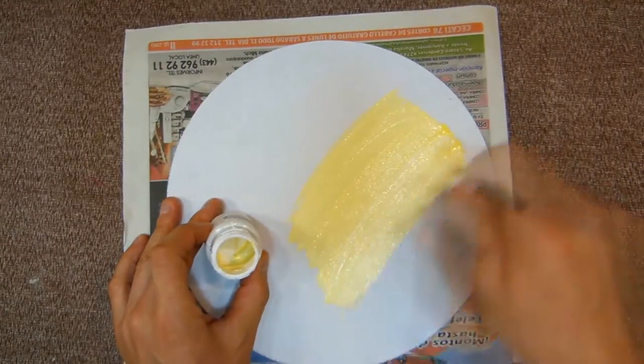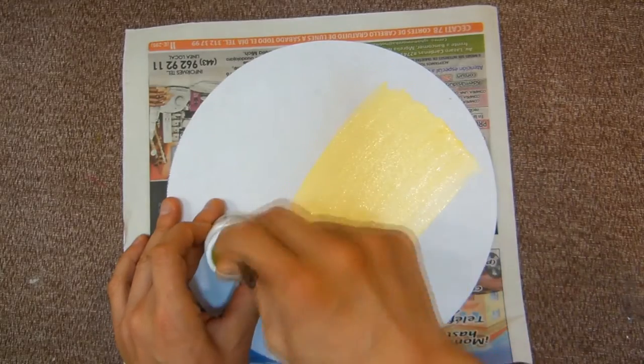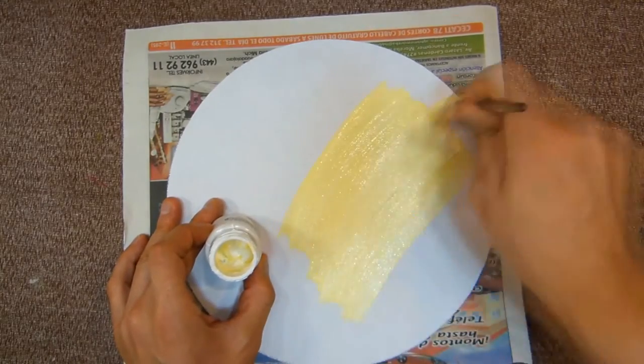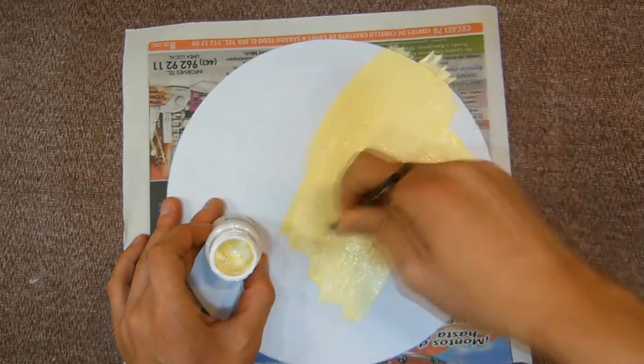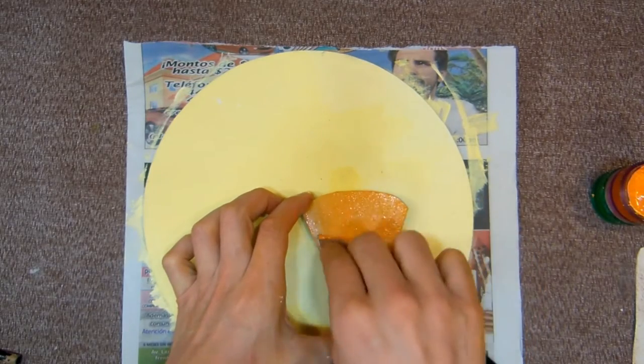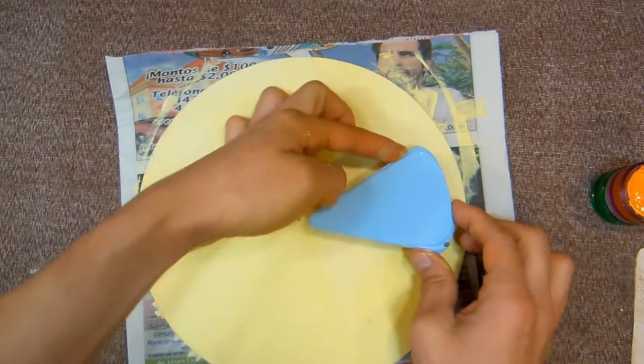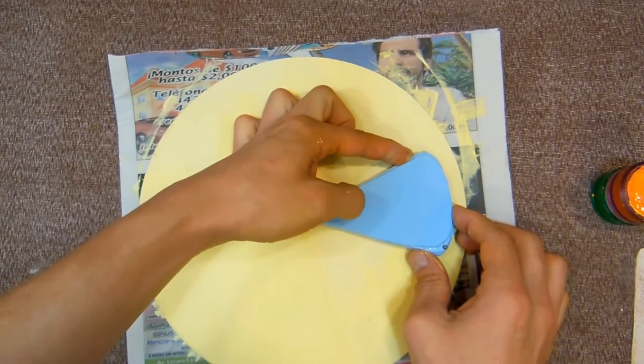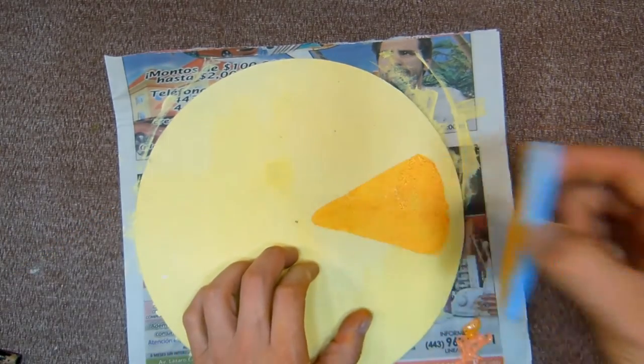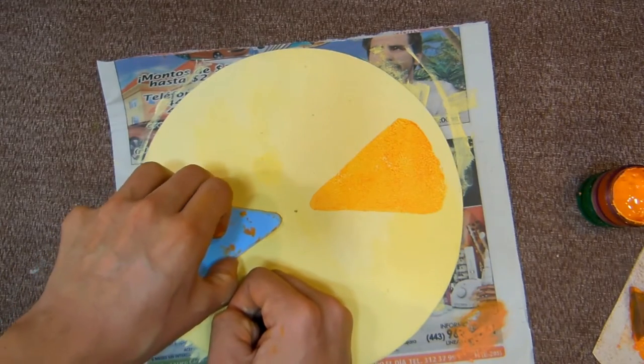Now with a light yellow color paint the circle. When it dries, take the stamp and start stamping triangles. Use orange paint.